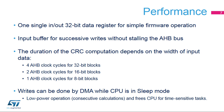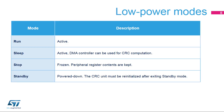The duration of computation depends on the data width: four AHB clock cycles for 32-bit blocks, two AHB clock cycles for 16-bit blocks, and one AHB clock cycle for 8-bit blocks. The DMA controller can be used for writing to the CRC engine, offloading the CPU for other tasks and enabling back-to-back calculations for verifying code or data integrity. The CRC calculation unit requires the main AHB clock to operate.